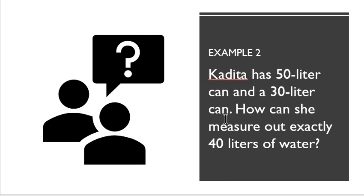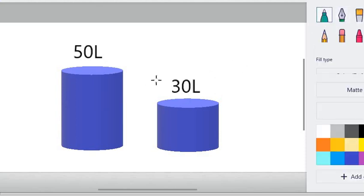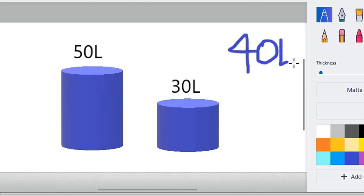Next problem: Calvita has a 50-liter can and a 30-liter can. How can she measure exactly 40 liters of water using just these two containers? So we have a 50-liter can and a 30-liter can, and our goal is to measure out exactly 40 liters.